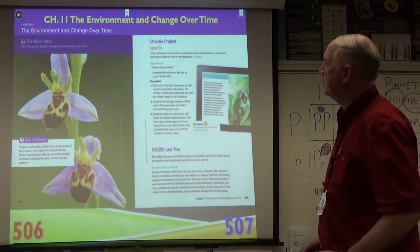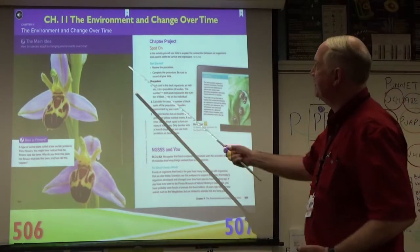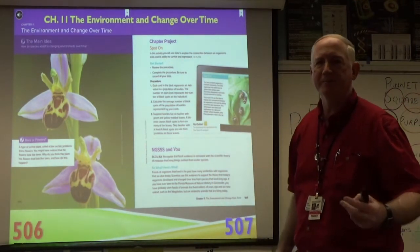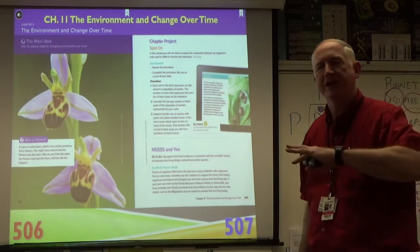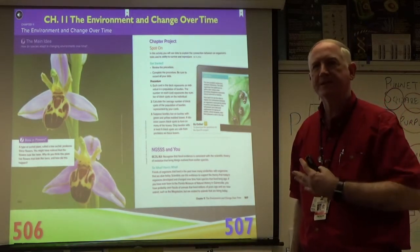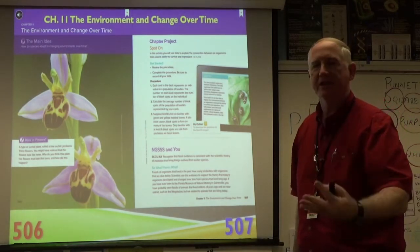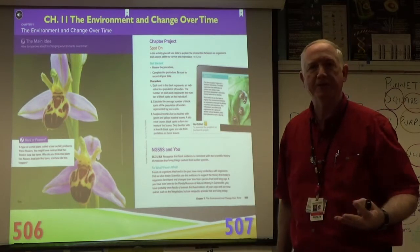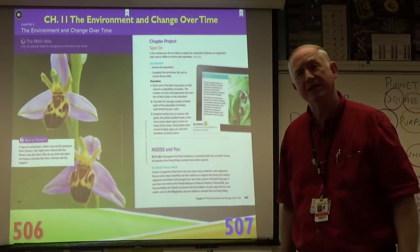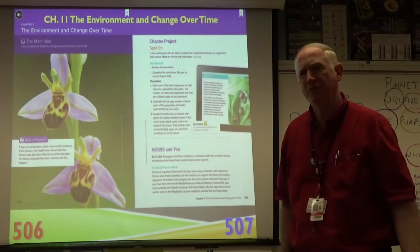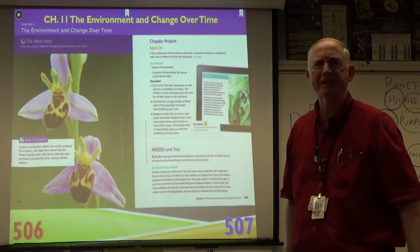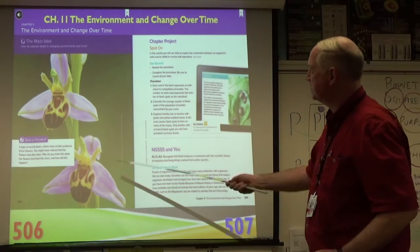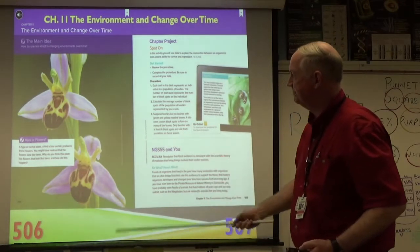In Unit 4, Chapter 11, we're looking at the environment and change over time — both how the Earth responds to the living things on it and what's happened over pretty much the last 4.6 billion years. Incredible things like this beautiful orchid.